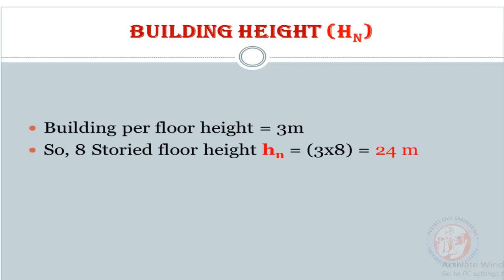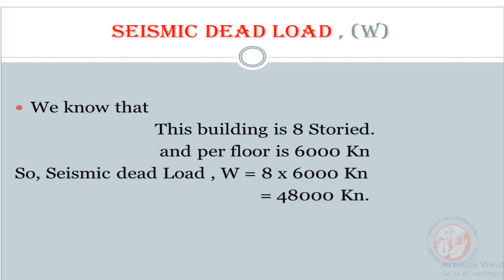Building height: we know the building per floor height is 3 meters, so the 8-story building total height is equal to 24 meters. Now seismic dead load W equals 8 times 6000 kilonewtons, which equals 48000 kilonewtons.